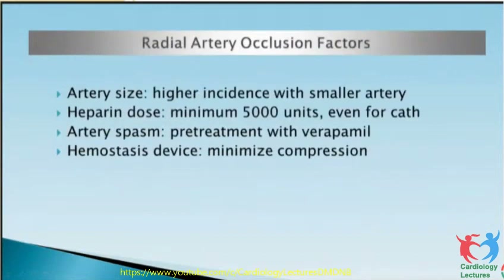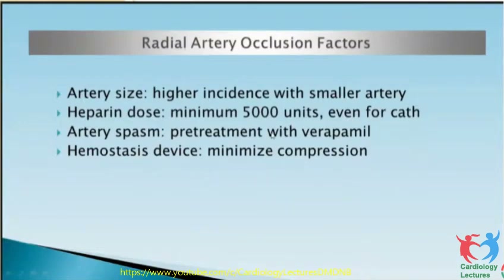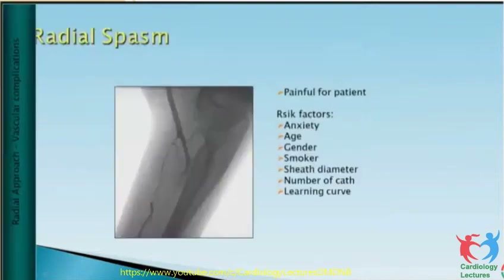Radial artery occlusion factors: artery size — higher incidence when the artery is smaller, especially in females. Heparin dose — we use 5,000 units either in the form of a cocktail or given separately through the vein. Artery spasm — pre-treatment with verapamil, diltiazem, or nifedipine. Hemostatic devices — minimum compression should be used.